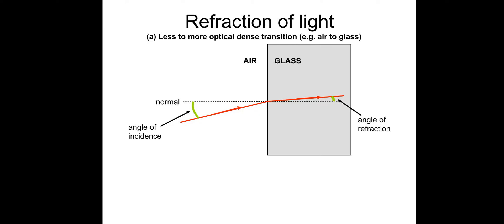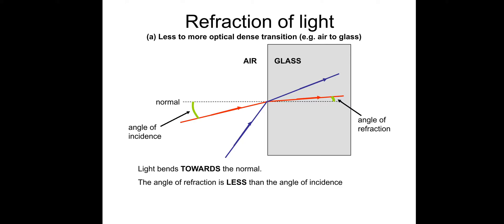We've got this label: we've got the angle of incidence, we've got the angle of refraction, and the normal. Remember the angles are drawn from the normals — normals are at 90 degrees to the surface. So on this one, light goes in, refracts towards the normal — light bends towards the normal — and the angle of refraction is less than the angle of incidence. That's when we go from less dense to more dense.